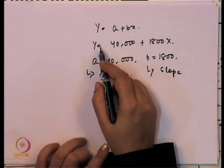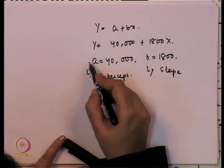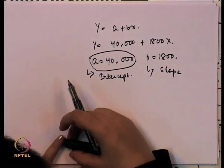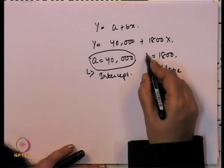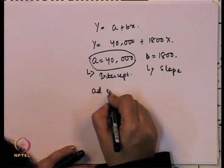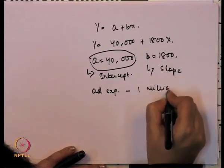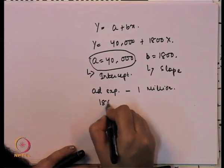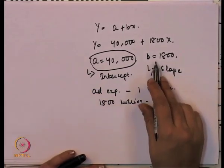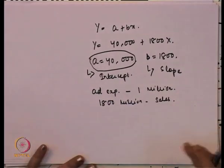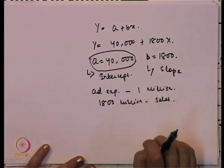If y is the sales and x is the advertisement expenditure, when there is no advertisement expenditure the value of y will be equal to 40,000. So total sales without advertisement expenditure will be 40,000. And since the value of b is 1800, if the measurement unit is in million terms, advertisement expenditure of 1 million will bring 1800 million increase in sales, because this is the slope value of 1800.